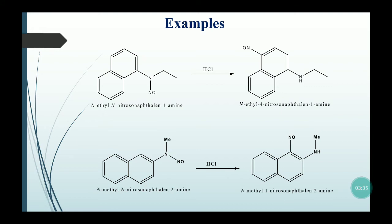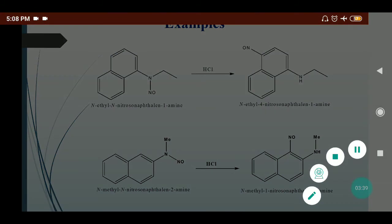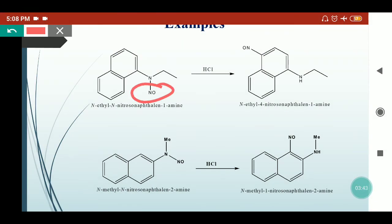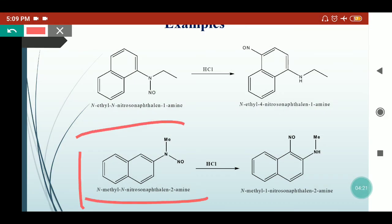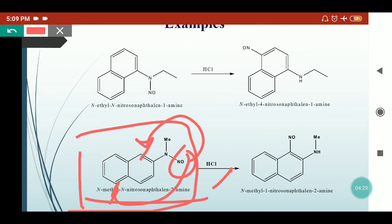For the naphthalene system, when naphthalene amines are substituted with the nitroso group and treated in acidic HCl media, the nitroso group migrates to give para-nitroso naphthalene amine. However, if the para position is already occupied with respect to the amine group, the nitroso group migrates instead to the ortho position. So we obtain the ortho-nitroso aromatic amine product in that case.